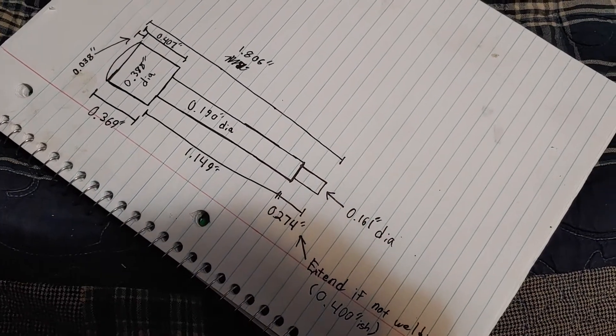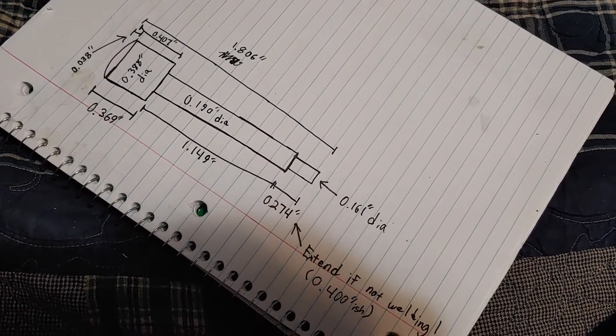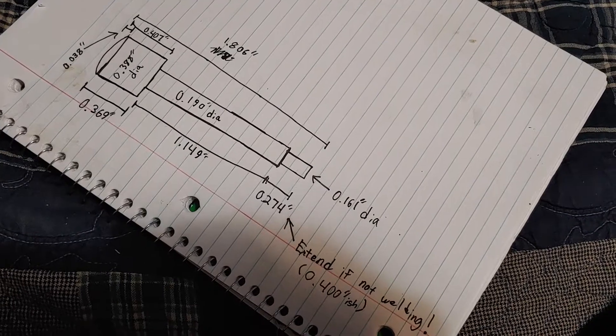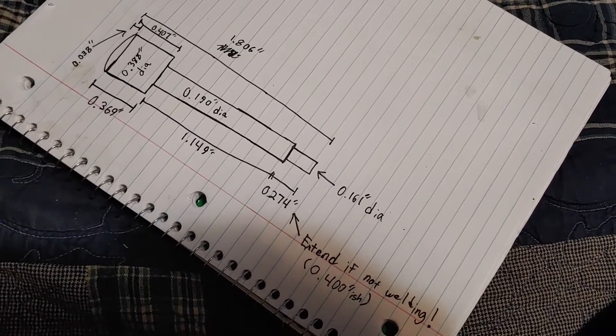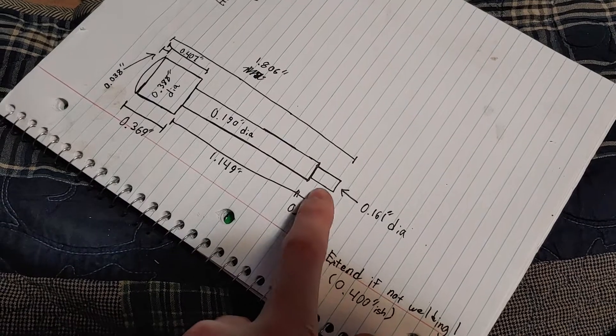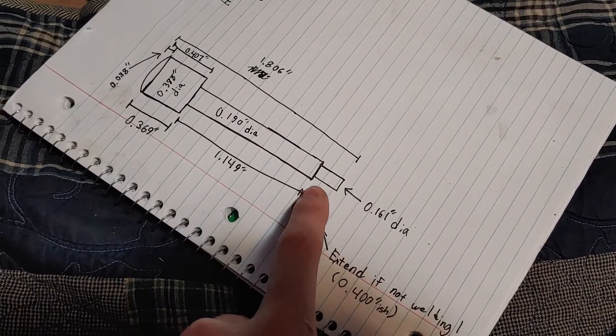If you can't read dimensions, then you're probably not in a position to be making one in the first place. But here's what it is. This measurement right here, this little nub goes into the actual locking bar.